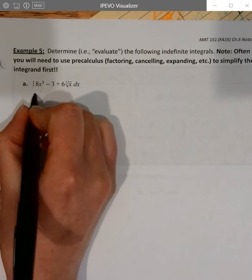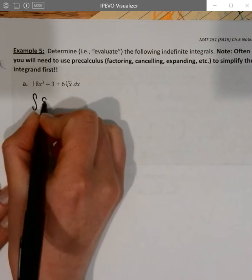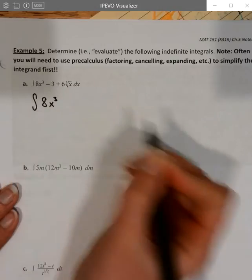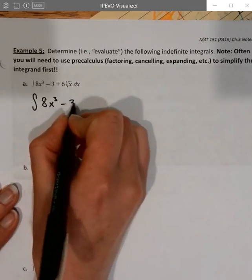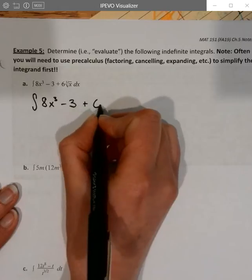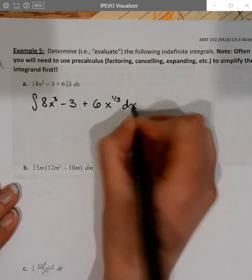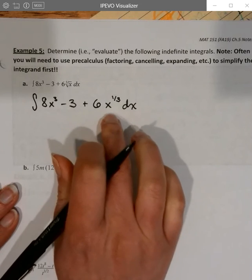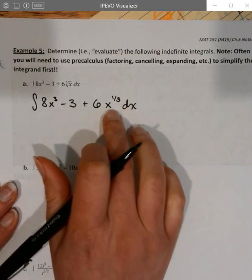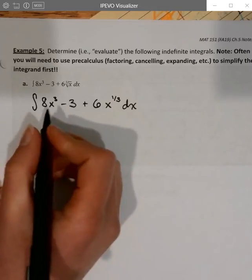So if I want to integrate, I already know how to handle 8x to the 3rd minus 3, so I'll leave those alone, plus the 6 cube root of x. I know it's x to the 1 3rd power, and then our dx. So I just want to rewrite the radical, because I had to do that to differentiate anyway. So we're going to rewrite that so we can use the power rule on it.